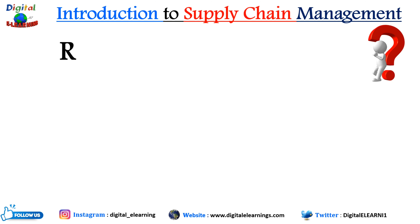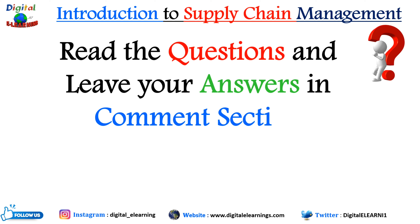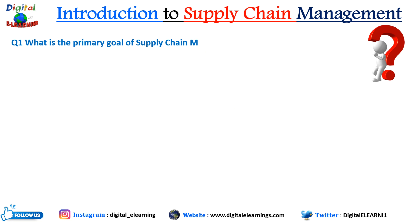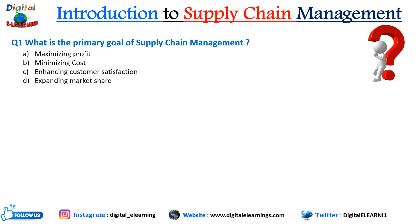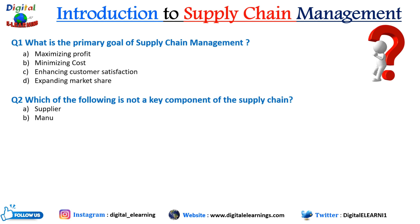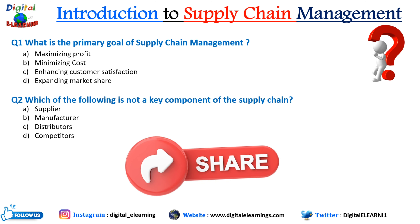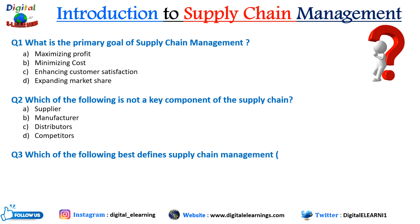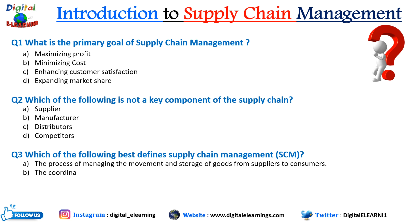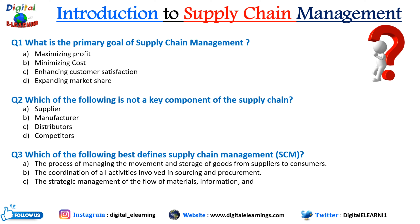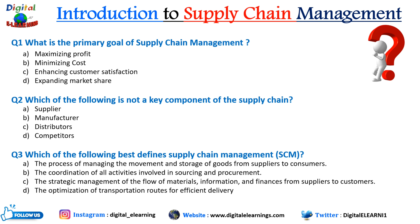Now for the quiz — read the questions and leave your answers in the comment section below. Question one: What is the primary goal of supply chain management? Maximizing profit, minimizing cost, enhancing customer satisfaction, or expanding market share? Question two: Which of the following is not a key component of supply chain? Supplier, manufacturer, distributors, or competitors? Question three: Which of the following best defines supply chain management? The process of managing movement and storage of goods from supplier to consumer; coordination of all activities involved in sourcing and procurement; strategic management of the flow of material, information, and financing from supplier to customers; or optimization of transportation routes for efficient delivery?